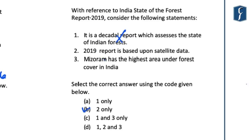Statement 2 says the 2019 report is based upon satellite data — this statement is correct. In tune with the Government of India's vision of Digital India, the Forest Survey of India's assessment is largely based on digital data derived from satellites, vector boundaries of districts, and data analysis techniques such as GIS. Information from a satellite known as ResourceSat-2 was utilized. But it was also coupled with field visits by forest officials to verify satellite data. Statement 3 reads: Mizoram has the highest area under forest cover in India — this statement is incorrect. As far as the largest forest cover area is concerned, the state is Madhya Pradesh, followed by Arunachal Pradesh and Chhattisgarh. But Mizoram tops the list as far as the percentage of forest area is concerned.